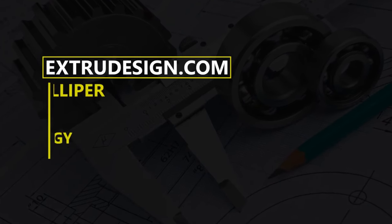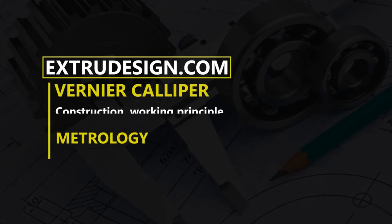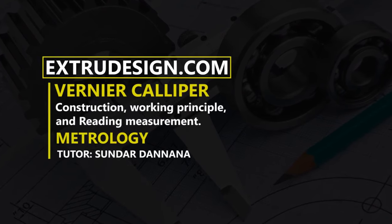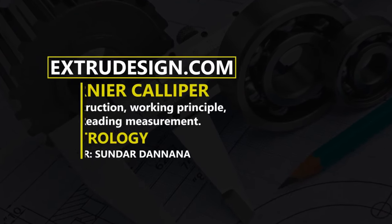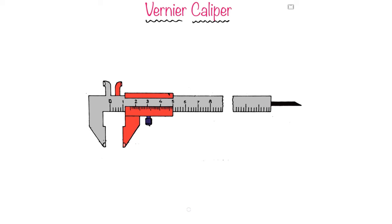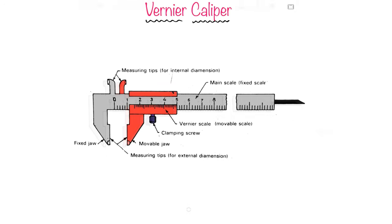Welcome to x2design.com. In this tutorial we are going to talk about the vernier caliper, which is one of the most important measuring devices in metrology. It is used to measure external and internal diameters, and also used to measure the depth of holes. Let's see the vernier caliper construction.